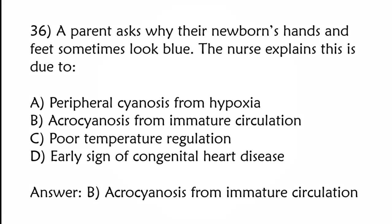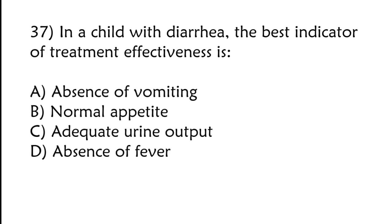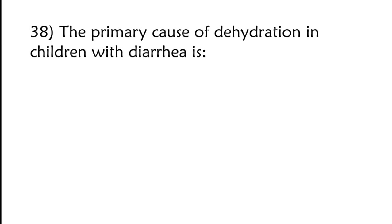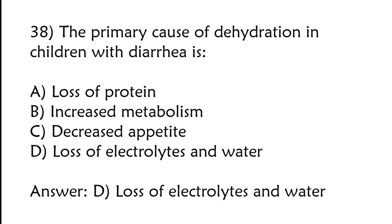In a child with diarrhea, the best indicator of treatment effectiveness is absence of vomiting, normal appetite, adequate urine output, absence of fever. Correct answer is option C, adequate urine output. The primary cause of dehydration in children with diarrhea is loss of protein, increased metabolism, decreased appetite, loss of electrolytes and water. Correct answer is option D, loss of electrolytes and water.